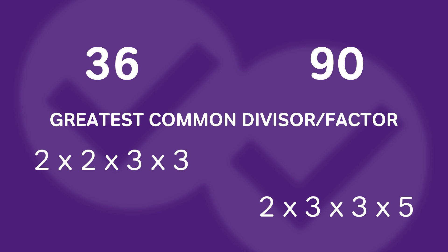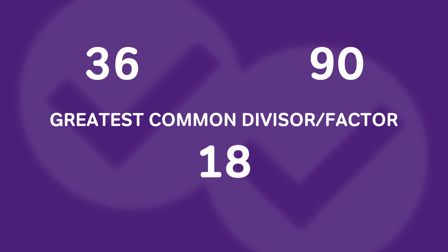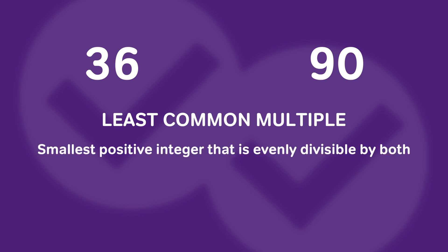Now that I have both factorizations — 36 = 2 × 2 × 3 × 3 and 90 = 2 × 3 × 3 × 5 — I look for numbers they have in common. They both have a 2, and they both have two 3s, so I circle those. To find the greatest common factor, I multiply those common numbers: 2 × 3 × 3 = 18. So the greatest common divisor is 18.